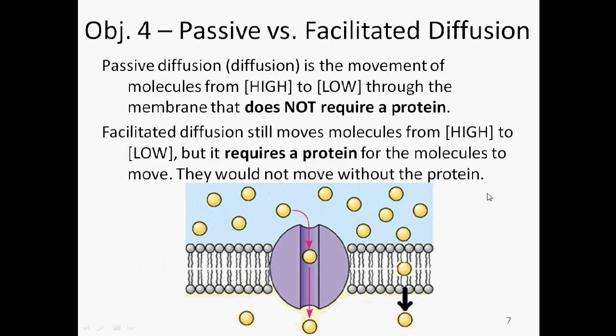Objective four is going to focus on the difference between passive and facilitated diffusion. Passive diffusion is technically just diffusion, just regular diffusion. Again, movement of molecules from high concentration to low concentration. However, this is going through the membrane. It does not require a protein. You might want to label your picture right now. This, over here to the right, is passive transport. This little yellow molecule is moving into the cell, or down. It doesn't matter which way, but we are going to say into the cell. And it does not require a protein to do so. There are not a lot of molecules that can do this, but this is an example of passive diffusion. It does not require a protein.